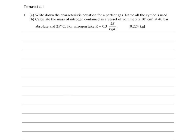Looking at tutorial 4-1, we are required to do two things. Write out the characteristic equation of a perfect gas and identify, name all the symbols used.